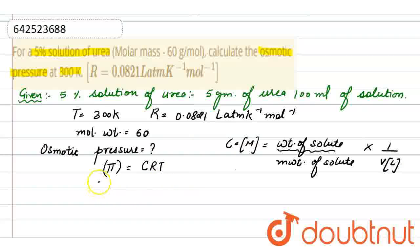Putting the values here: concentration is weight of solute, that is weight of urea 5, molecular weight is 60, and volume of solution is 100 ml. So we have to calculate the volume in liter, so divide by 1000. Gas constant R is 0.0821 and temperature is 300.